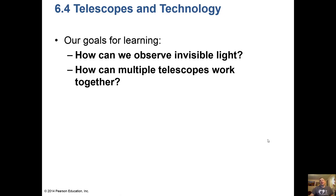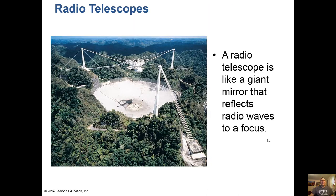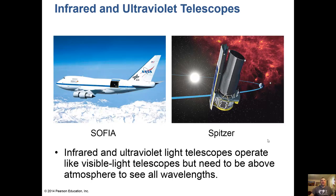How can we observe invisible light? A standard satellite dish is essentially a telescope for observing radio waves. The Arecibo radio telescope in Puerto Rico is the largest radio telescope in the world — it's built into the mountainside. You may have seen it in the movie Contact. A radio telescope is like a giant mirror that reflects radio waves to a focus. We also have SOFIA — a 747 aircraft with a telescope hanging outside — and the Spitzer Space Telescope. These infrared and ultraviolet light telescopes operate like visible light telescopes but need to be above the atmosphere.